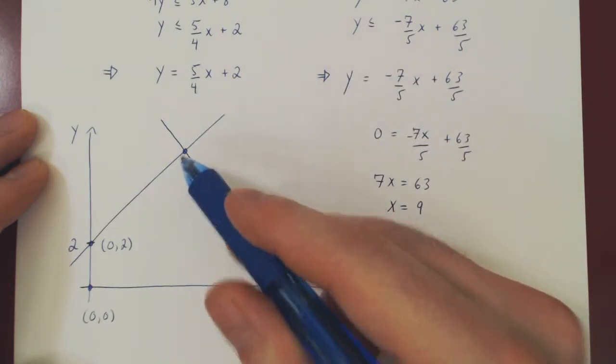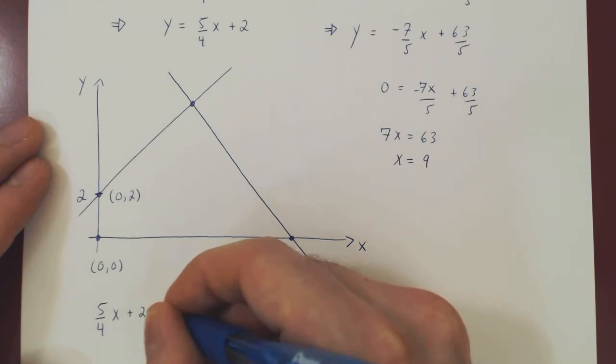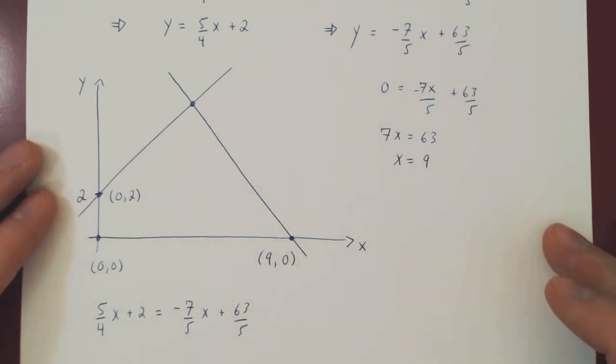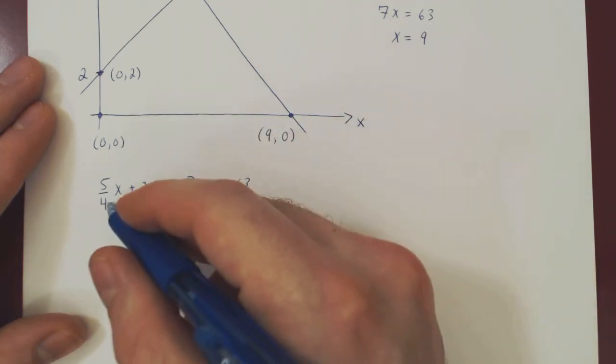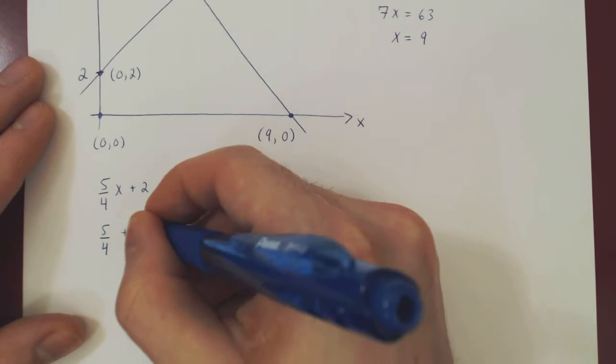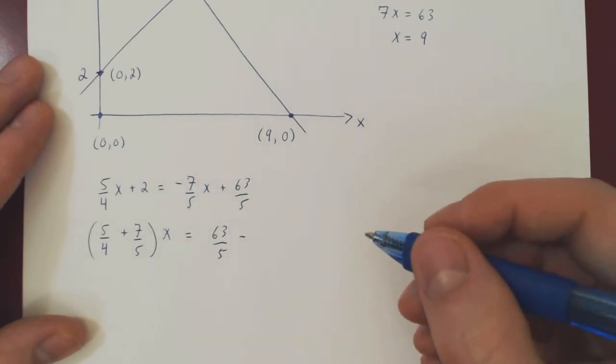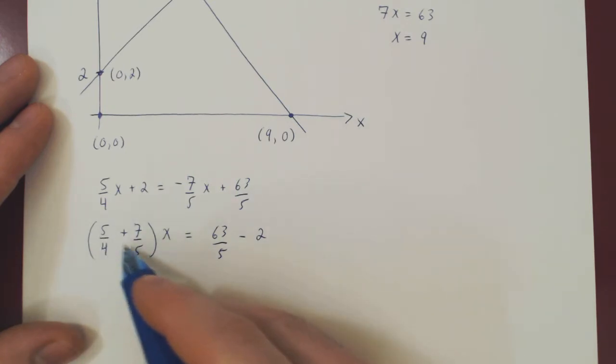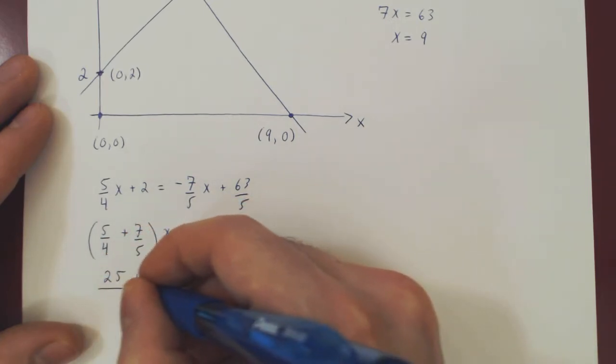And we're missing the fourth and final vertex which is the point of intersection of our two lines. Let's equate them, we'll solve for the x and then for the y-value. So 5 quarters x plus 2 must equal negative 7 over 5x plus 63 over 5. So, let's solve for x. Send the x's to the same side, the constant to the other. So we'll have 5 quarters plus 7 over 5, factoring the x from both terms, equals 63 over 5 minus 2.